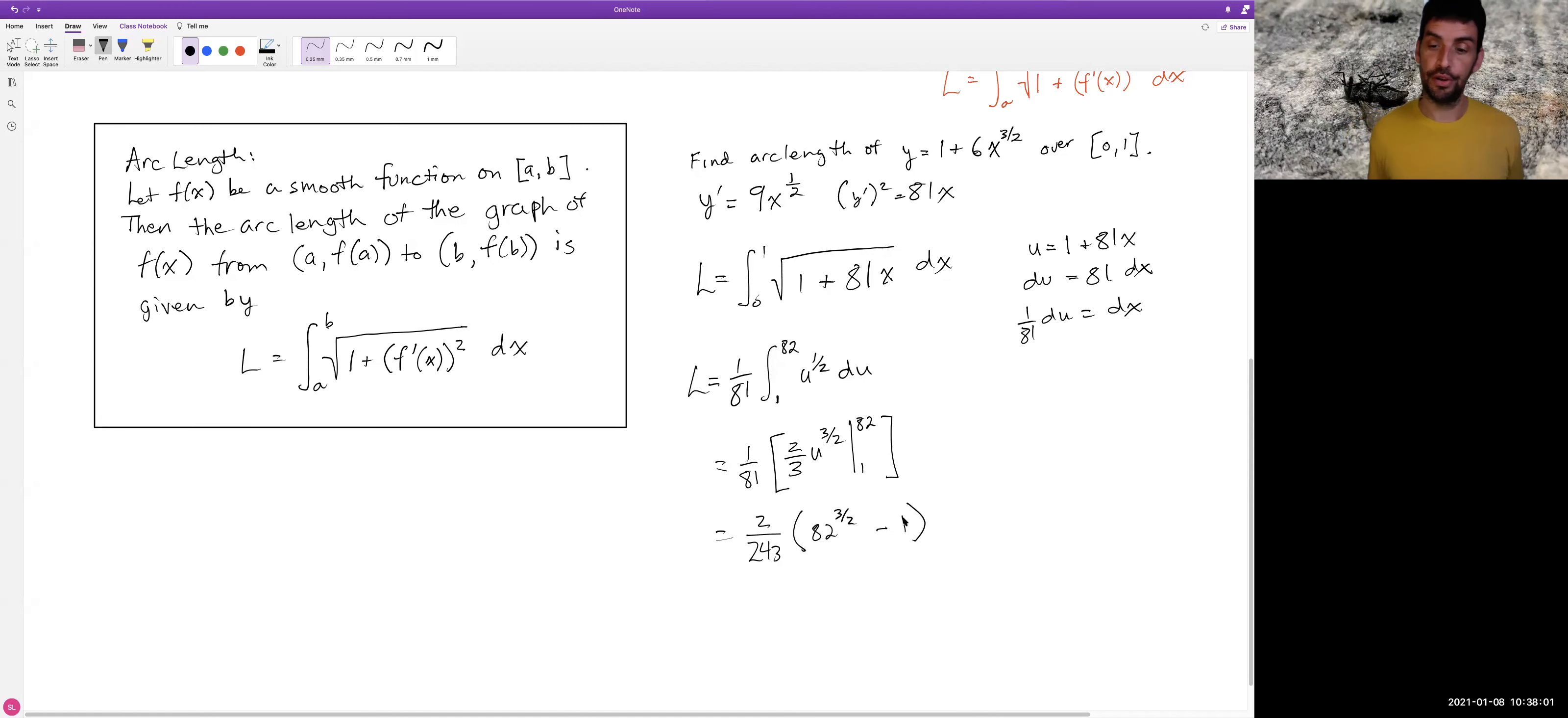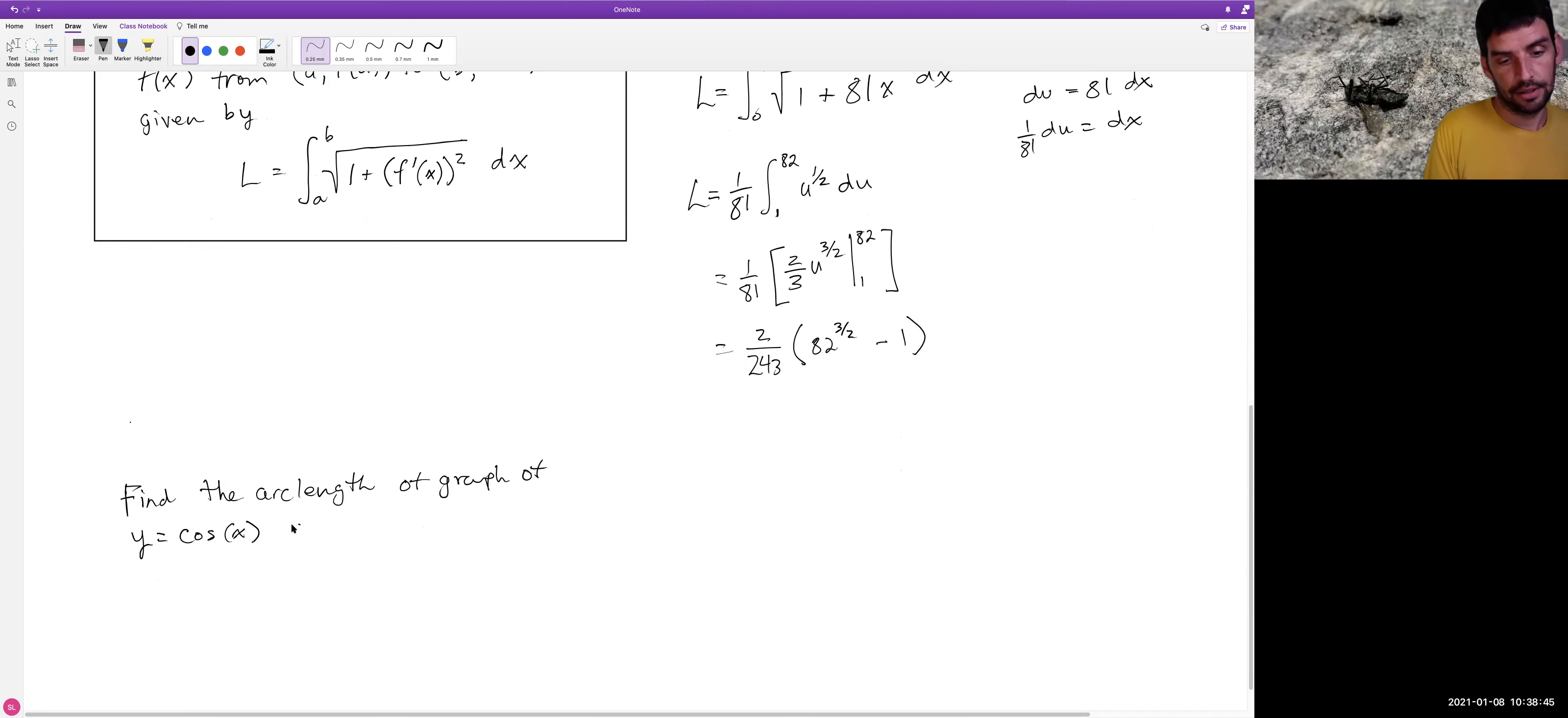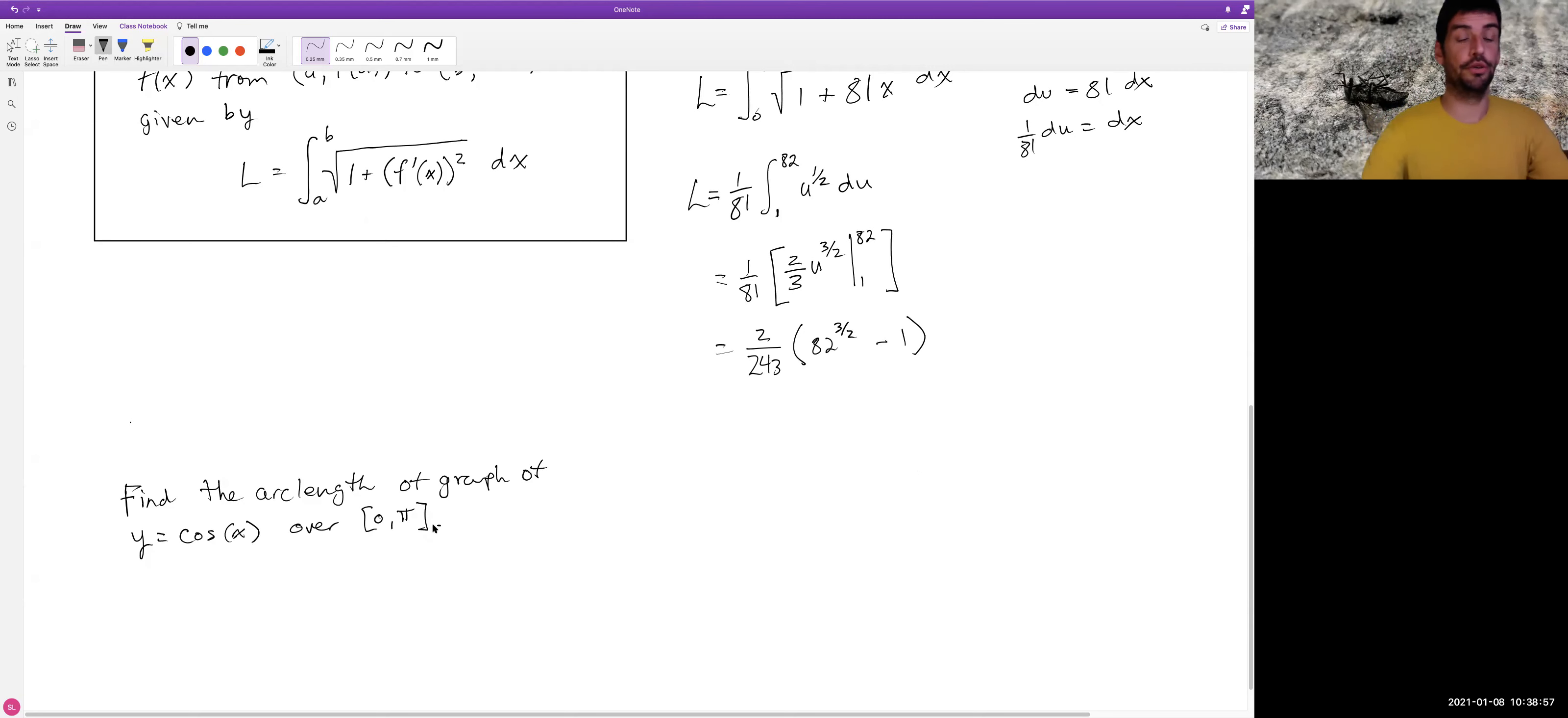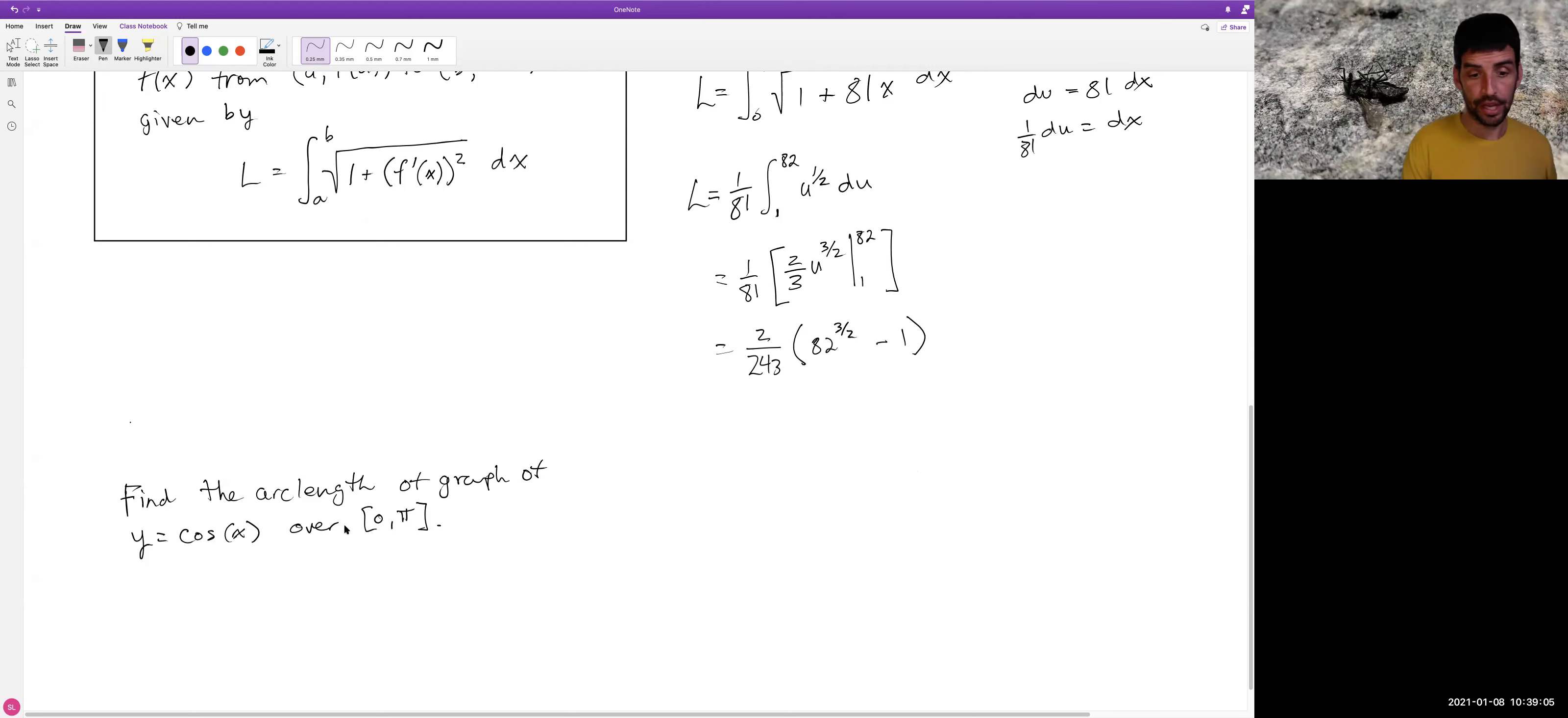All right. Let's do one more example. This one was, this first one is designed to work out relatively nicely, but let's take something a little less nice. Let's start with, let's find the arc length of the graph of y equals cosine of x over 0 to pi. So same idea. First of all, can we use the arc length formula? Is cosine a smooth function? Its derivative is negative sine, which is continuous everywhere. So we're good. So let's go ahead and compute.